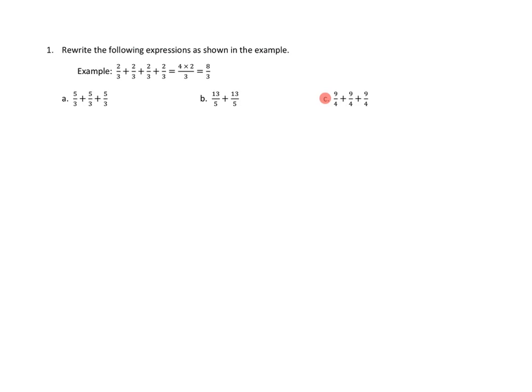Let's take a look at problem number one. Problem number one asks us to do the following: Rewrite the following expressions as shown in the example. And let's look at the example. It looks like they have two-thirds plus two-thirds plus two-thirds plus two-thirds, and they say, hey, that's just repeated addition.